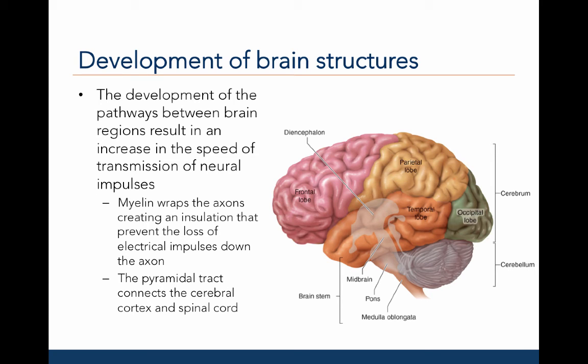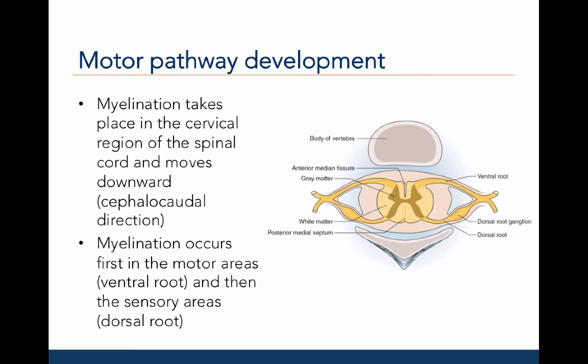The development of pathways between brain regions results in an increase in the speed of transmission of neural impulses. This occurs as myelin wraps around the axons, creating an insulation that prevents the loss of electrical impulses down the axon. The pyramidal tract, also called the corticospinal tract, connects the cerebral cortex with the spinal cord, which then activates muscles to cause movement. Motor pathway development occurs in the cephalocaudal direction, taking place in the brain first and then the cervical region of the spinal cord, before myelination proceeds down to the sacral region. Within the spinal cord, myelination first occurs in the motor areas or ventral root, and then in the sensory areas or dorsal root.